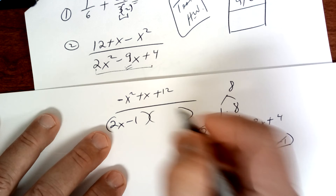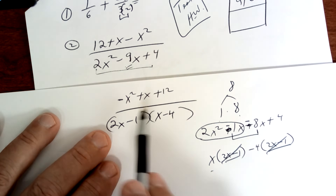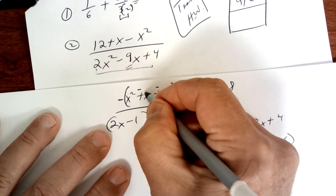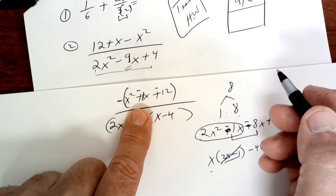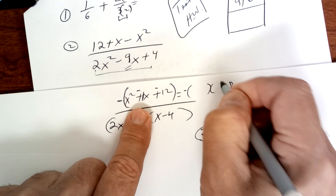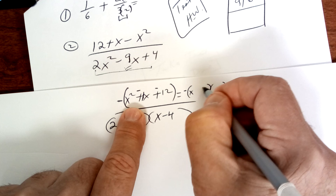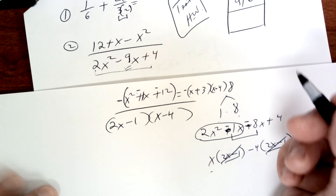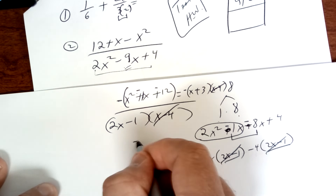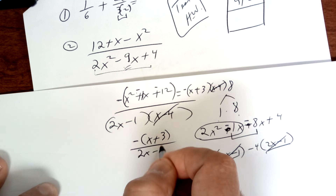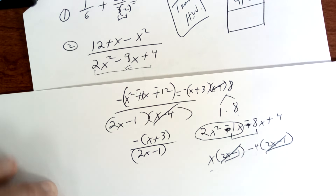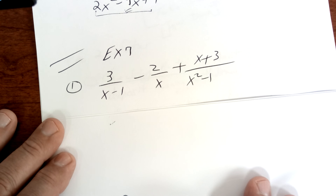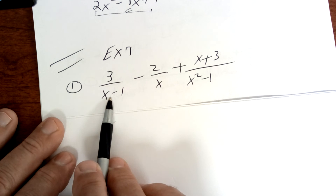You group factor by taking an x out of the first group and a negative 4 out of the second group. When you do this, the binomials match, so the bottom factors as (2x − 1). Then you take out a negative from the top group. This factors as (x − 3)(x − 4). The (x − 4) cancels and you're left with your answer. This is a review of factoring. Now let's talk about today's work — to add or subtract you need the same denominator.